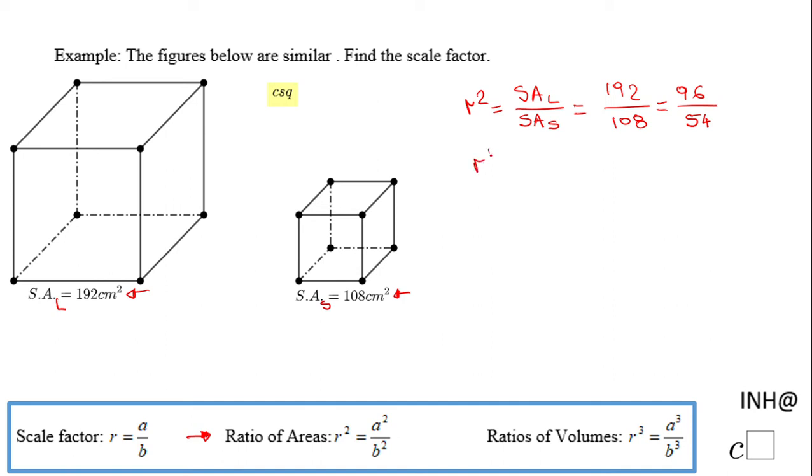We can keep simplifying by two. 96 divided by two will be 48, 54 divided by two is 27. Now we can also simplify by three, and we'll get 16 over 9.